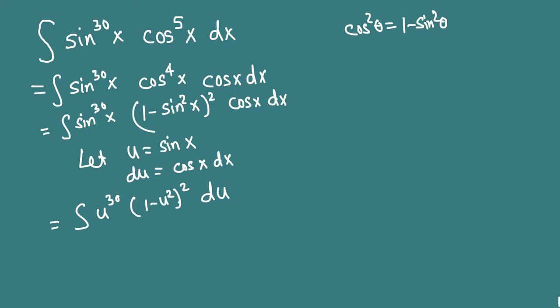Now simplify this polynomial. (1 - u²)² - we want to multiply (1 - u²) by itself, just foil. Then you'll get u^30 times (1 - 2u² + u^4) du.